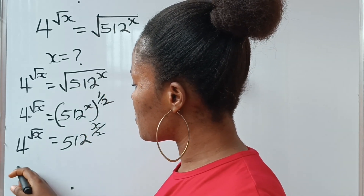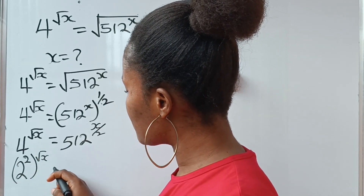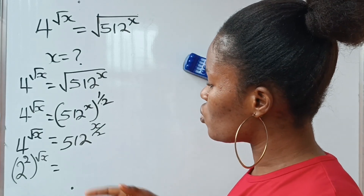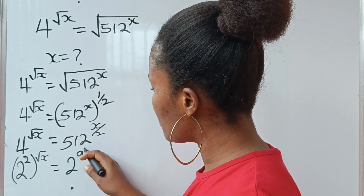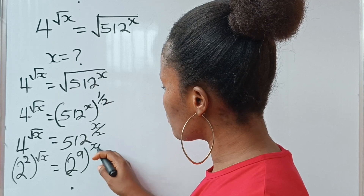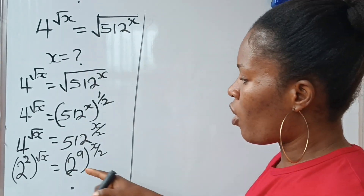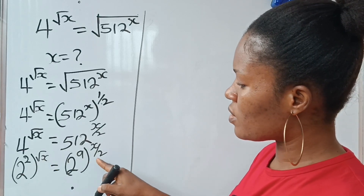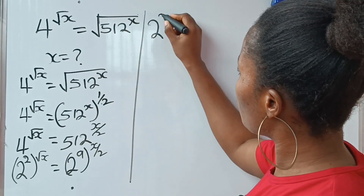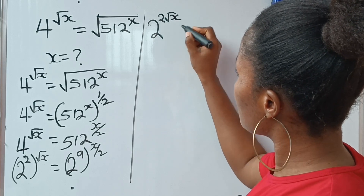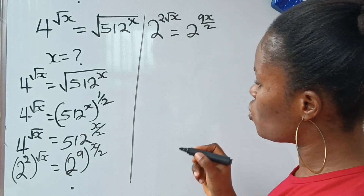Now, 4 is the same thing as 2 raised to the power of 2. So 2 squared raised to the power of root x is equal to 512, which is the same thing as 2 raised to the power of 9, raised to the power of x over 2.